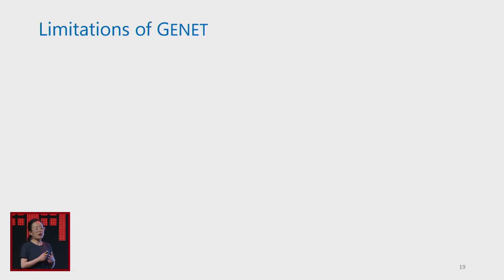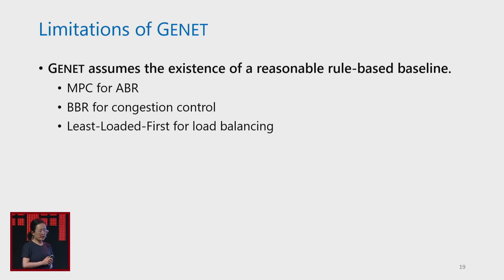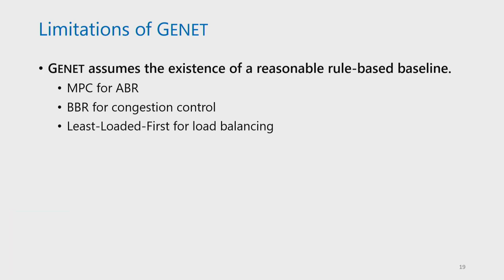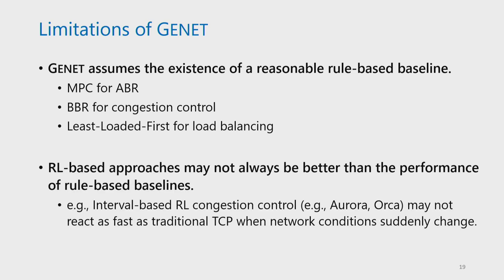Genet also has some limitations. First, Genet assumes the existence of a reasonable rule-based baseline, so for applications without any reasonable rule-based policy, Genet does not handle that case well currently — we leave this as future work. Second, for any RL-based approach, it's not guaranteed to always outperform rule-based baselines in practice. For example, an RL-based solution in congestion control may not react as fast as traditional TCP when network conditions change rapidly.